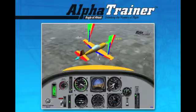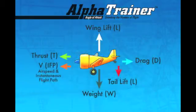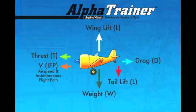Now stalls and spins are easy to see and understand. Lift, weight, thrust, and drag are the four forces of flight. The motion of the airplane through the air depends on the relative strength and direction of these forces, which are illustrated on Alpha Trainer 3D as vectors.